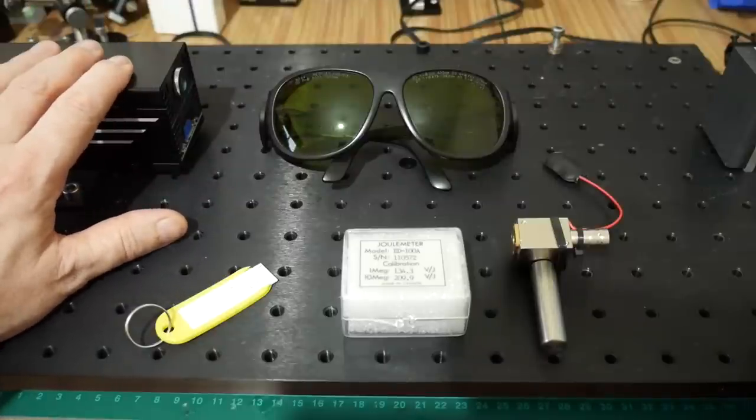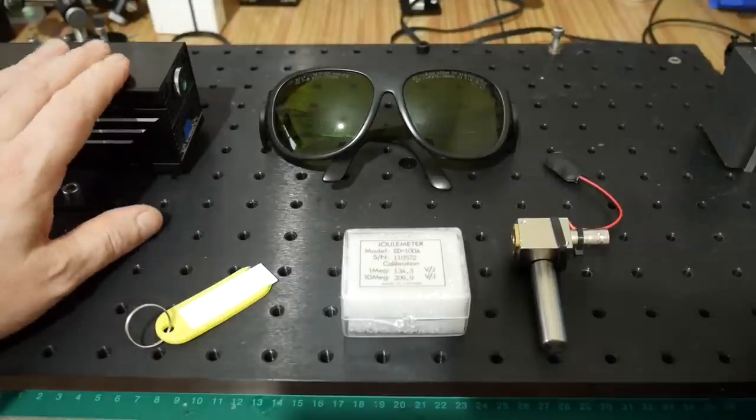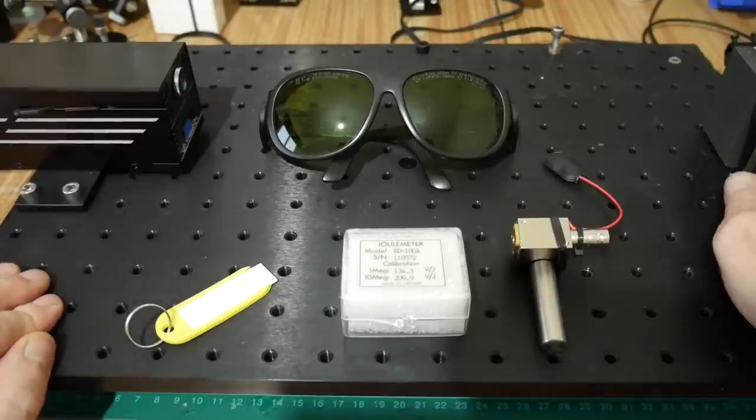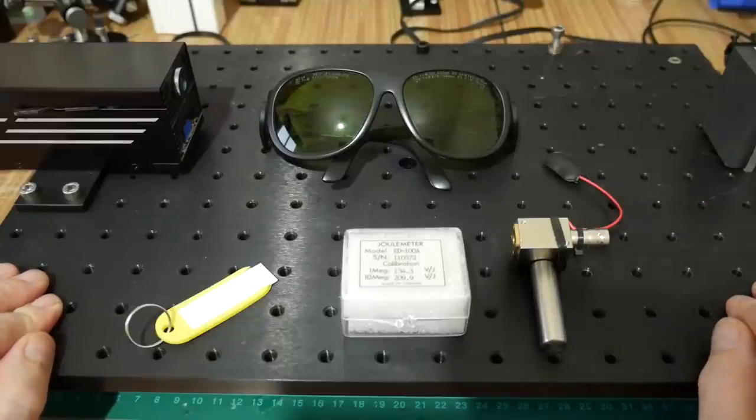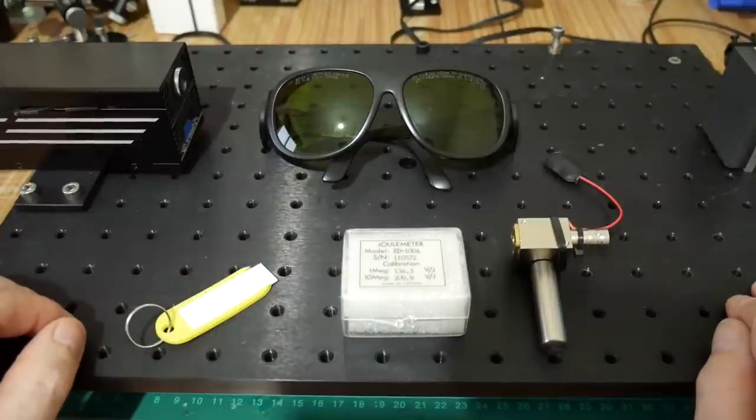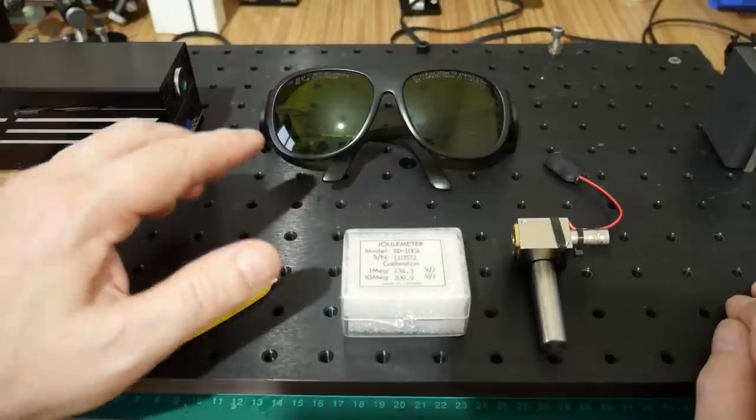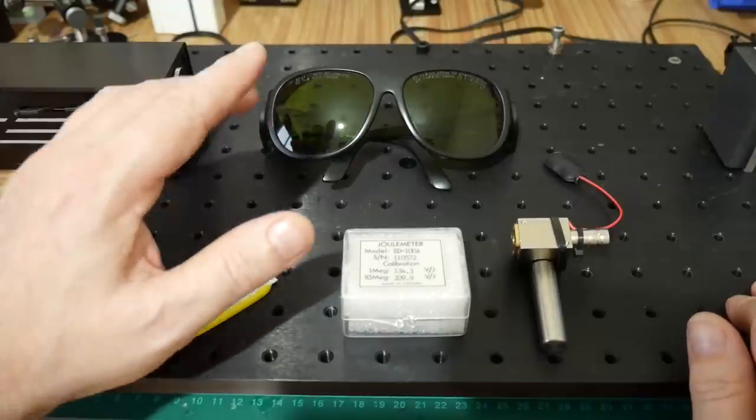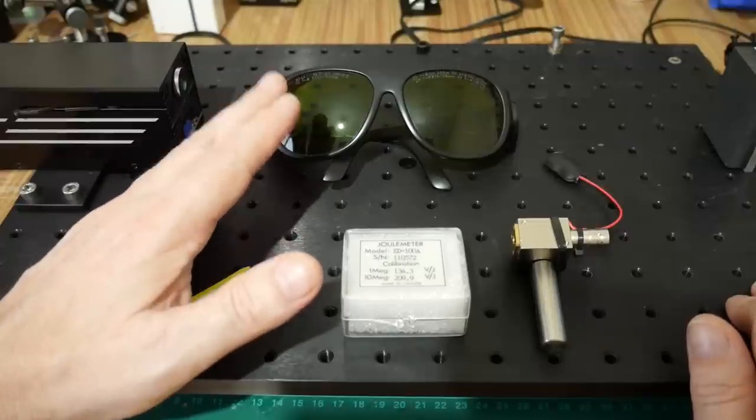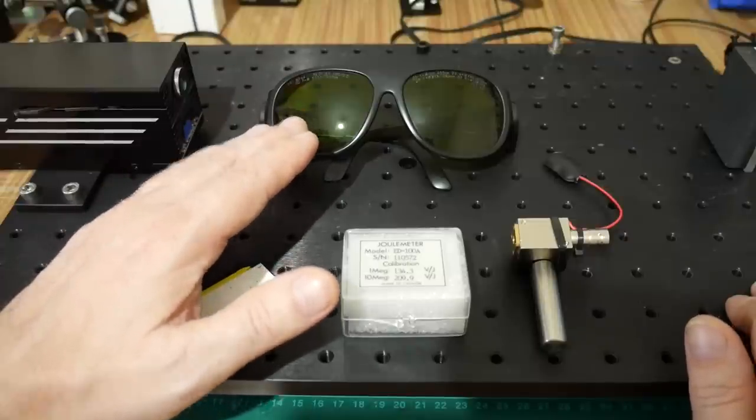You don't want a situation with class 4 lasers where you've got an unpredictable beam, so you need to make sure that things are predictable. On the right hand side I've got a beam block which will capture most of the beam should an error occur during measurement and I also have the all important laser safety glasses. It should be noted that 2trees don't actually supply these, these are my own. These are optical density 9 at 1064 nanometers, they're certified and they will do a perfect job of protecting my vision.